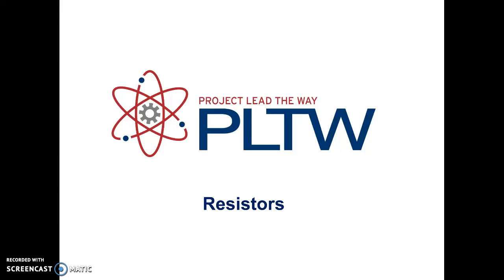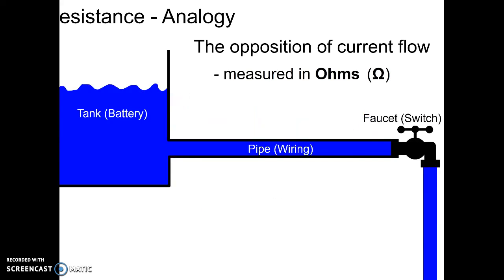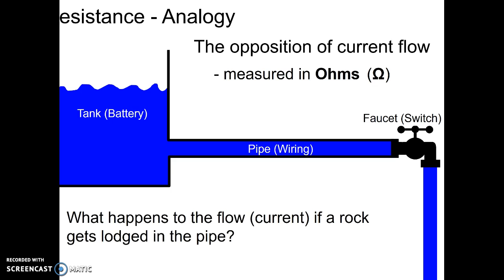This presentation is going to go over resistors, and we've talked about resistors in the past. If you remember the analogy of the water tank and the water flowing through the pipe, the resistor can be thought of as a rock that is thrown into the system that essentially, when it plugs up the line, actually slows down the flow of water. So an actual resistor in a circuit would do something similar, but it would slow down the flow of electrons.